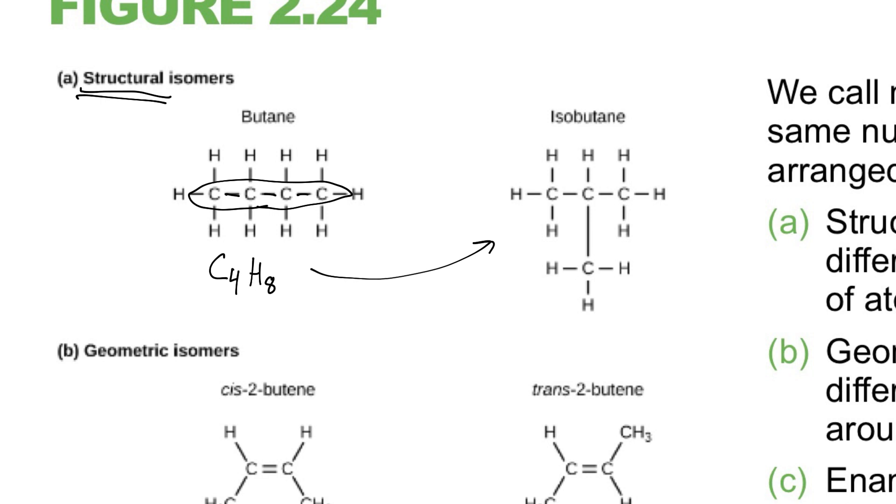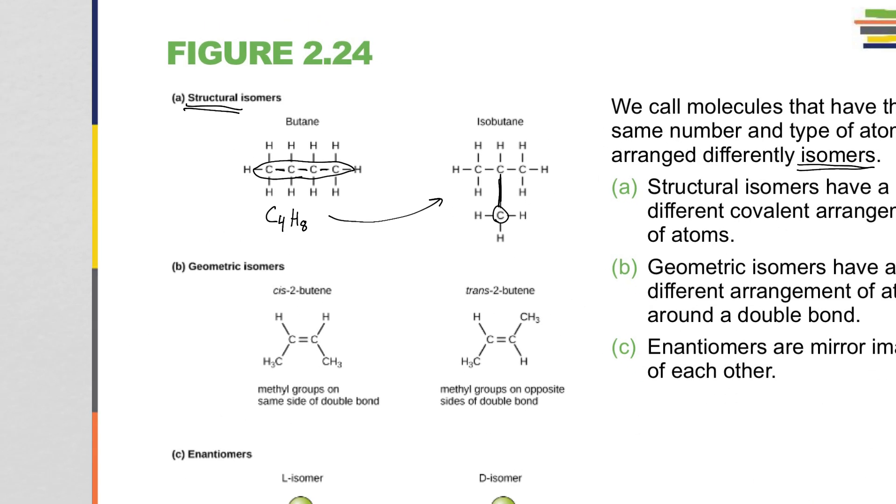In isobutane, this fourth carbon is branched off of the middle one. And so even though the number of carbons and the number of hydrogens doesn't change, the arrangement is different enough that it's a different molecule. It has different properties. You can expect changes in its melting point or boiling point or the reactions that it participates in.